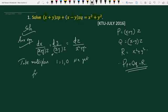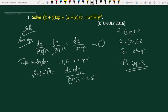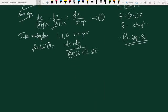Using multipliers 1, 1, 0, the fraction becomes dx plus dy all divided by x plus y into z plus x minus y into z. This can be written as d of x plus y divided by x·z plus y·z plus x·z minus y·z. These terms cancel, and we get d of x plus y divided by 2xz, giving a new fraction.